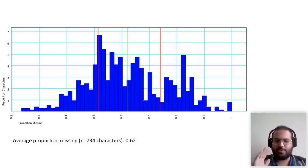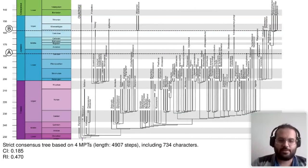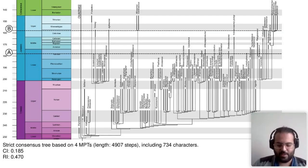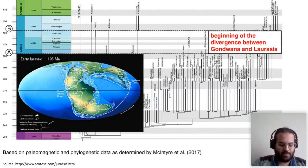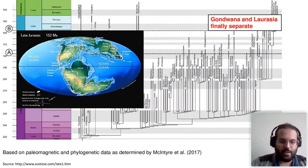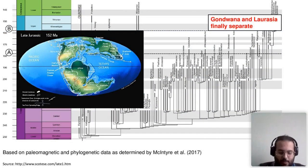The lone spike near position one in the histogram represents autapomorphies used for Bayesian analysis, which I won't discuss here. Using TNT, the new technology search found four MPTs with a length of 4,907 steps. When plotted against the stratigraphic column, it is evident that the group must have undergone a very quick diversification, and interestingly this diversification occurred well before Pangaea broke up. The diversity of sauropodomorphs seems to be disconnected from vicariance when you go back to the Late Triassic, whereas in the Middle Jurassic with sauropods, vicariance becomes more predominant in explaining diversity.